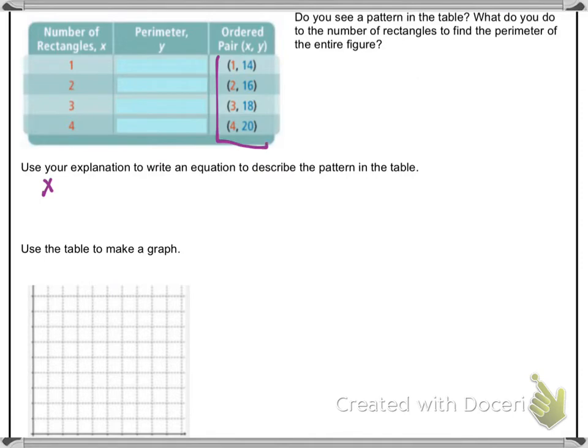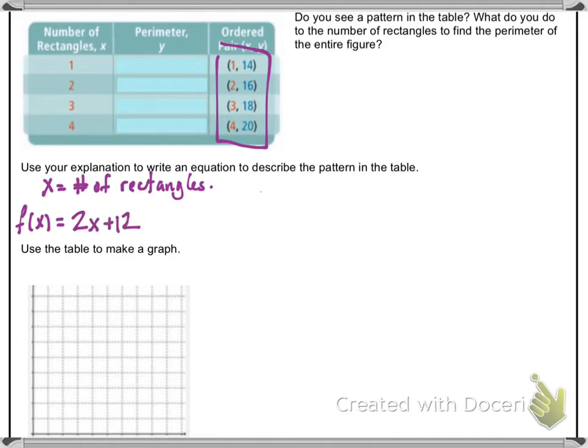So continue to the bottom of the page. I'm not going to recopy them, but there's the ordered pairs. We're going to write an equation. So if x is the number of rectangles, then f(x), our function based on that, is 2 times x, 2 times the number of rectangles, plus that initial value of 12.